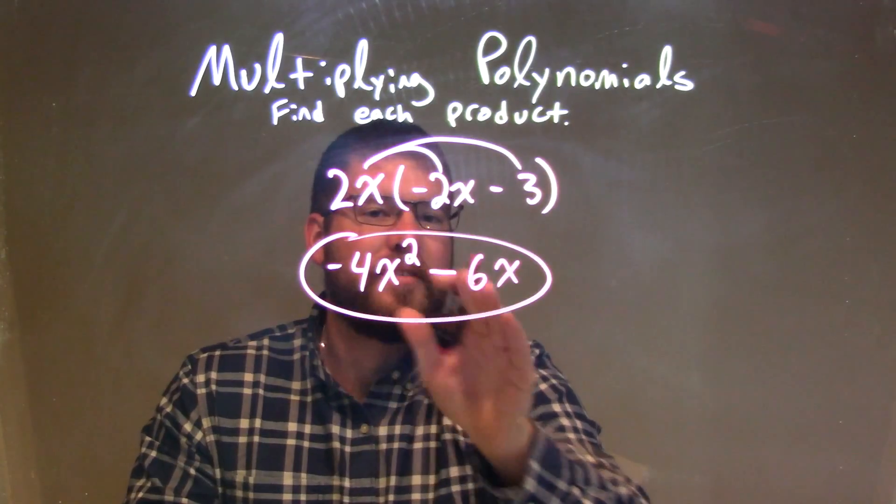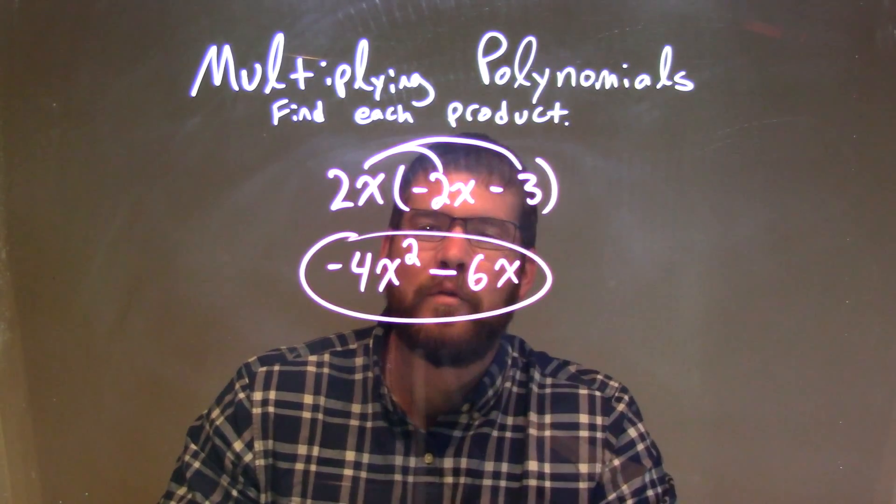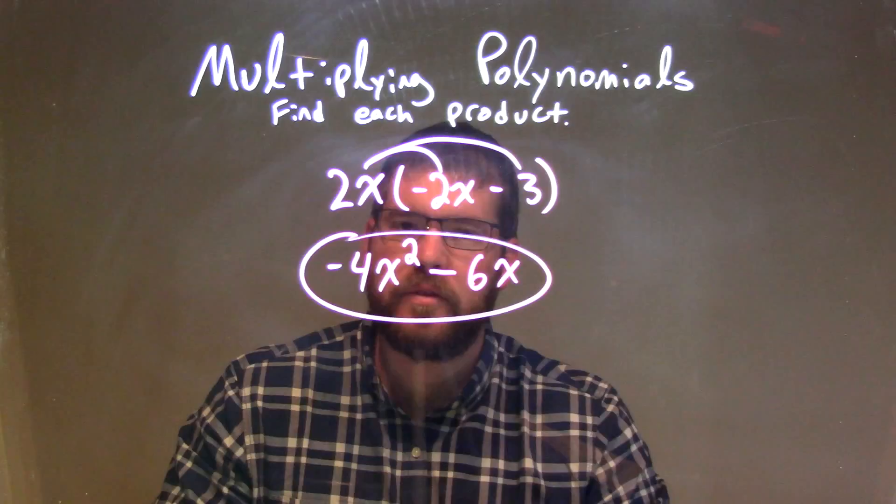We can't simplify this anymore, and so our final answer is just negative 4x squared minus 6x.